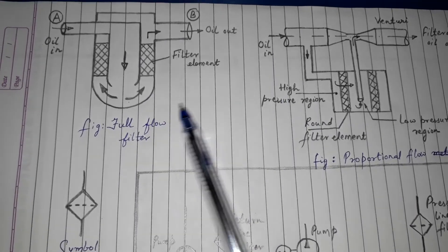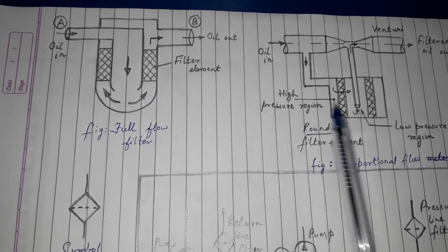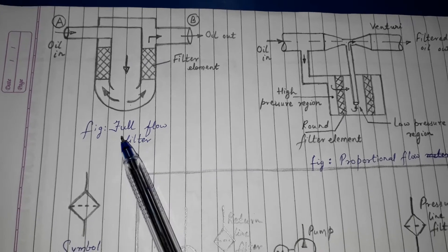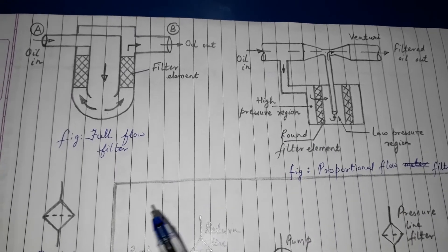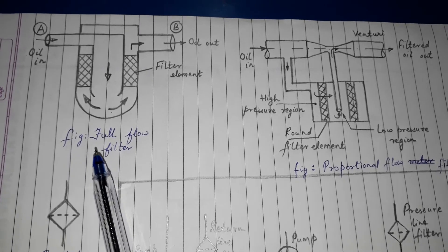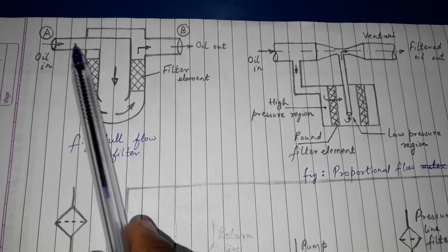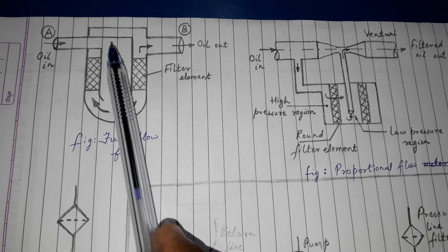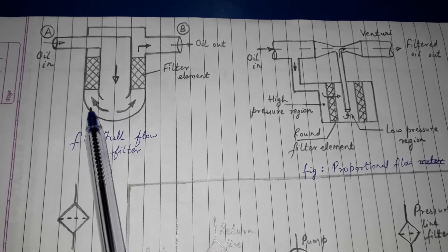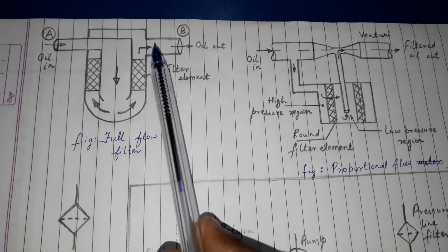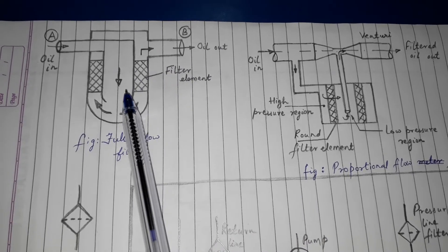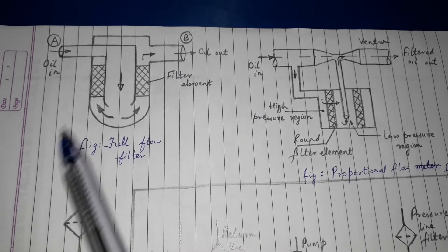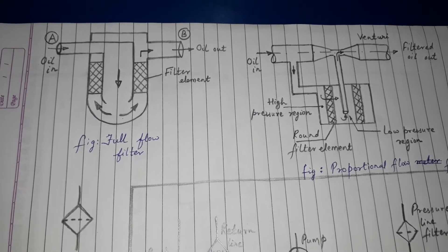Filter के classification की बात करें तो एक है full flow filter और दूसरा है proportional flow filter। Full flow filter में oil port A से अंदर आता है, filter element से pass होने के बाद port B से चला जाता है। पूरा flow filter होकर बाहर जाता है, इसलिए इसे full flow filter कहते हैं।